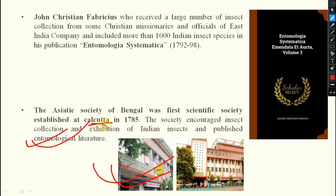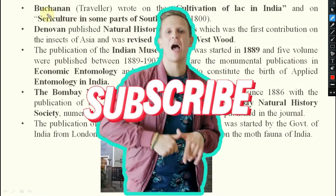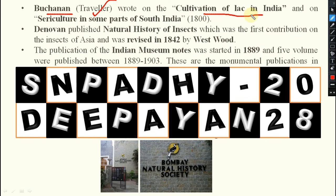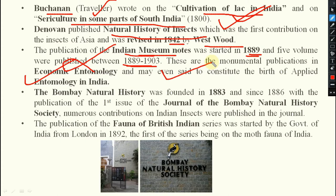Coming to the 19th century: Buchanan, who was a traveler, wrote on the cultivation of lac in India and on sericulture in some parts of South India — very important economic entomological contributions. Buchanan-Dana-Van published 'Natural History of Insects,' which was the first contribution on insects of Asia, revised in 1842 by Westwood. The publication of the Indian Museum Notes was started in 1889 and five volumes were published between 1889 to 1903.